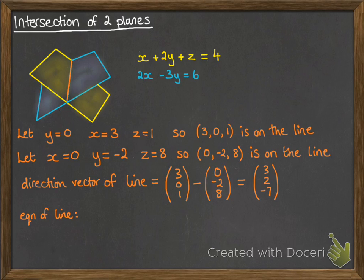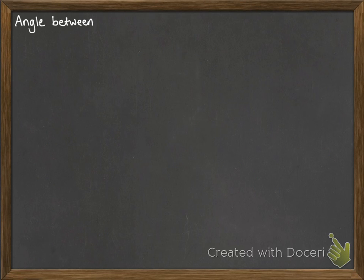So then the equation of the line will be r equals, and then we need to use one of those vectors as a position vector to get us up onto the line, and then the direction vector multiplied by lambda. So any multiple of that direction vector.